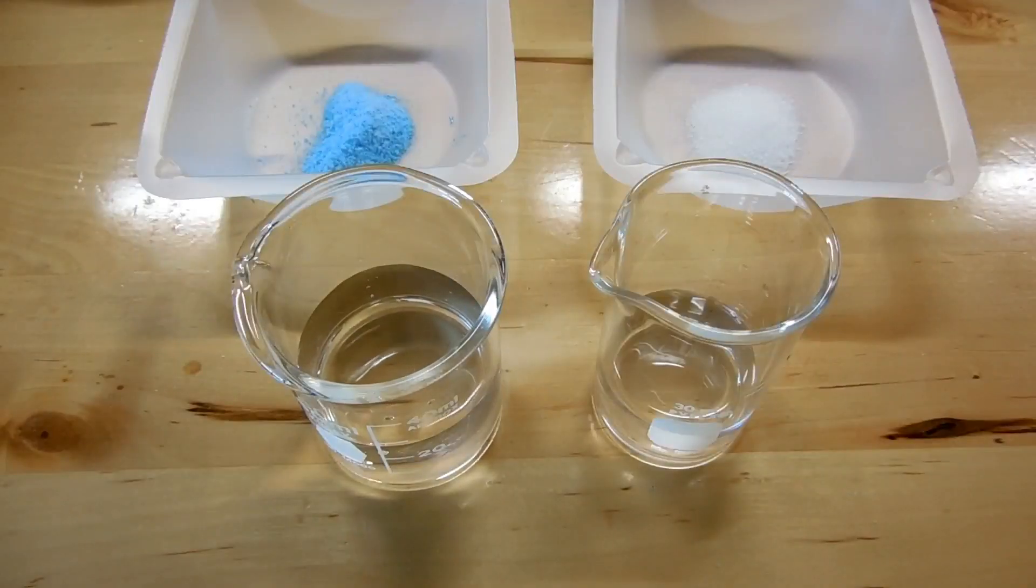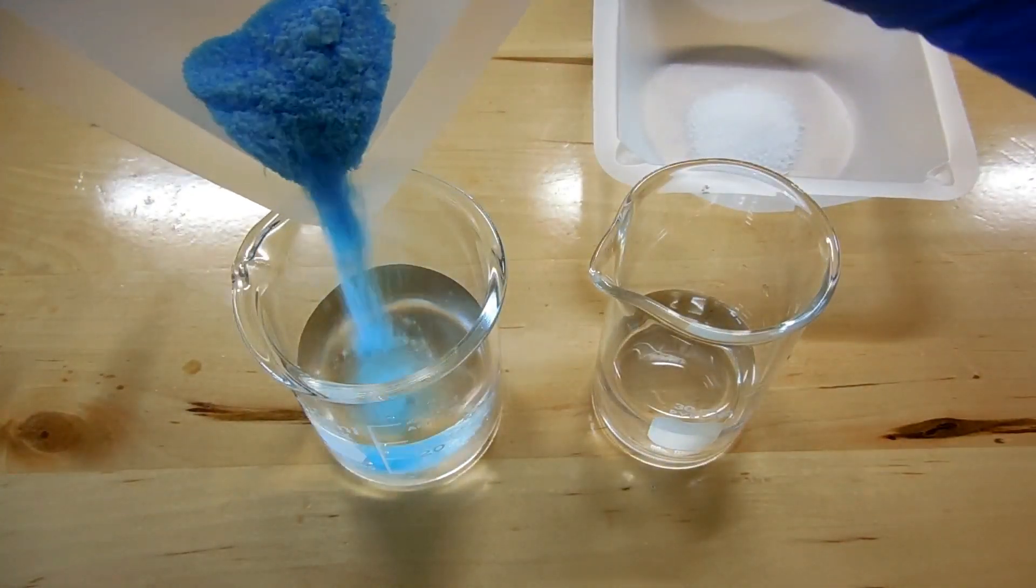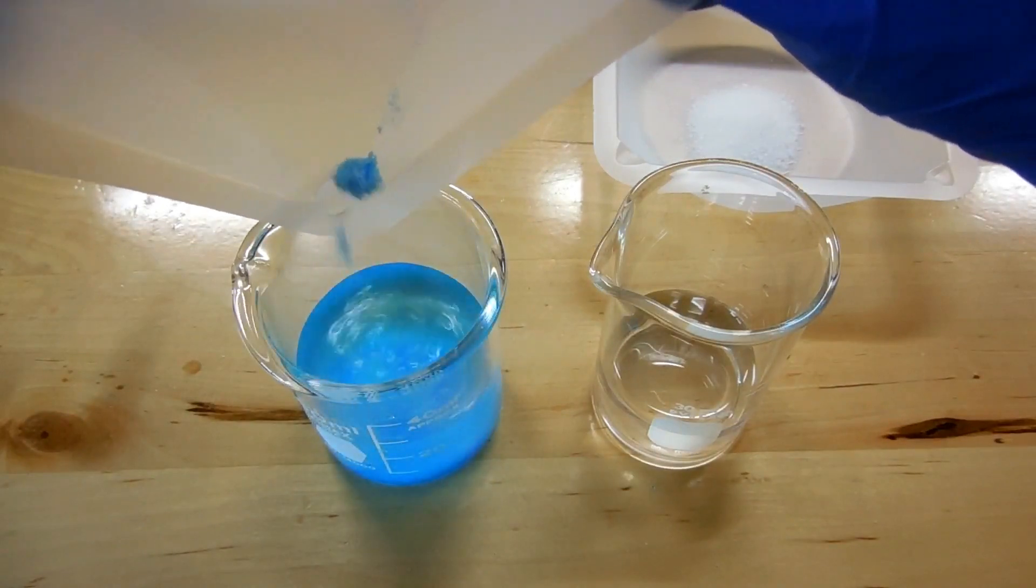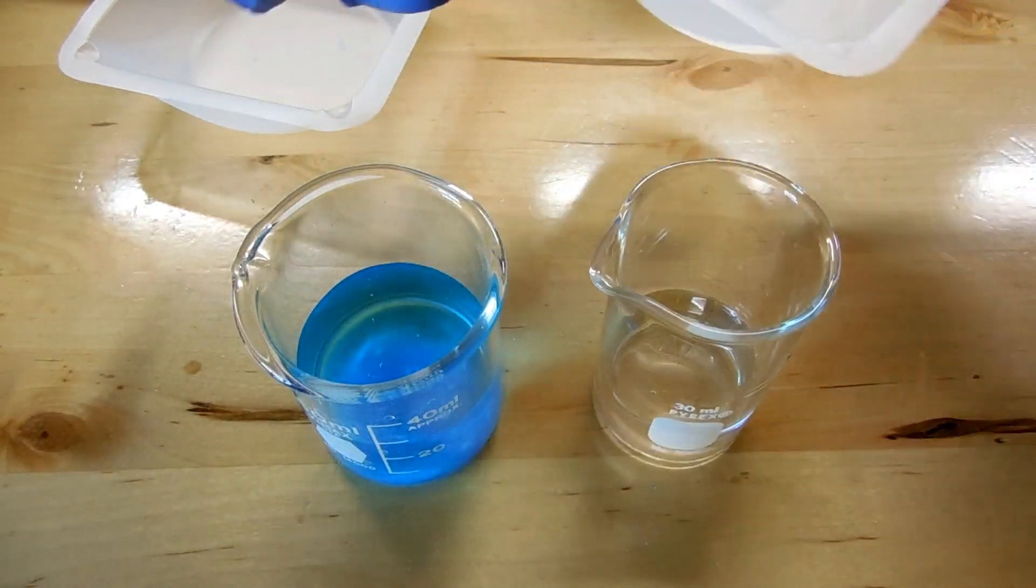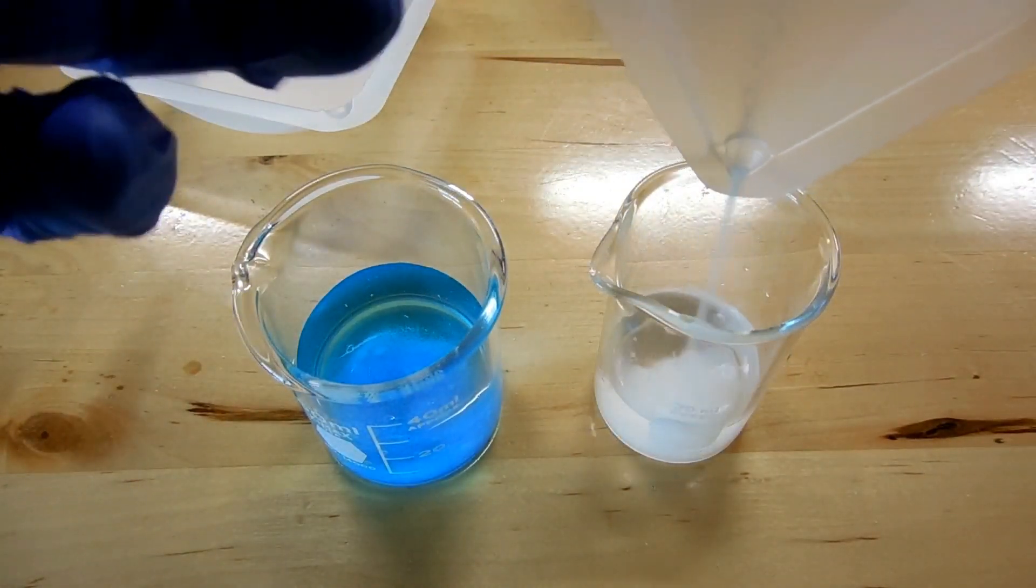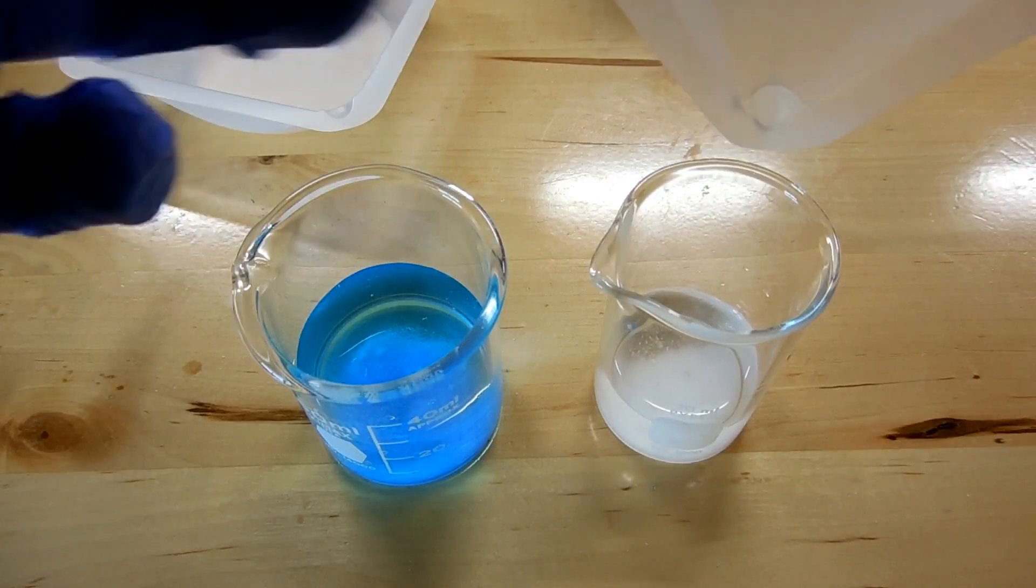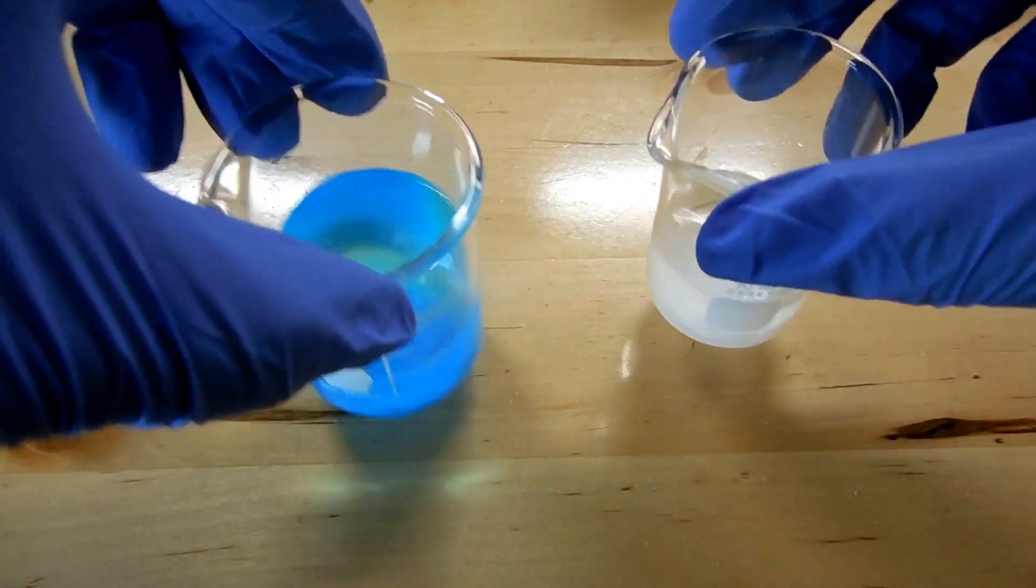Alright, now the solutions I'm going to make are 25 milliliters of distilled water for the copper sulfate, and 10 milliliters of distilled water for the sodium metabisulfite, and let's mix those up to dissolve them.